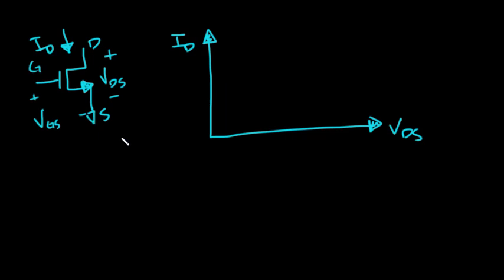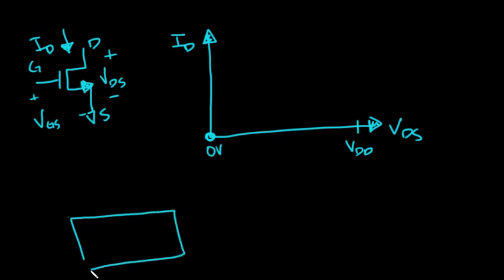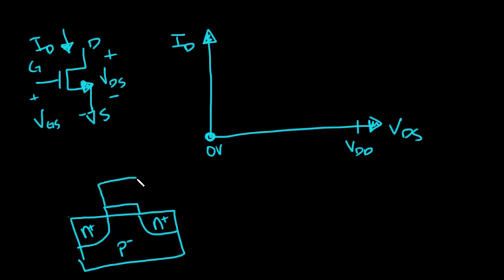It's helpful to put the source at ground, so we can just vary VD from zero volts all the way up to VDD — the supply voltage. First, let's start with VGS set to zero. To understand what's happening, it's helpful to draw the cross-section of the device. If we were to cut this MOSFET, flip it on its side and look at it, we've got a P-minus body, N-plus source and drain regions, silicon dioxide, and a thick polysilicon gate. We label the source, gate, and drain.